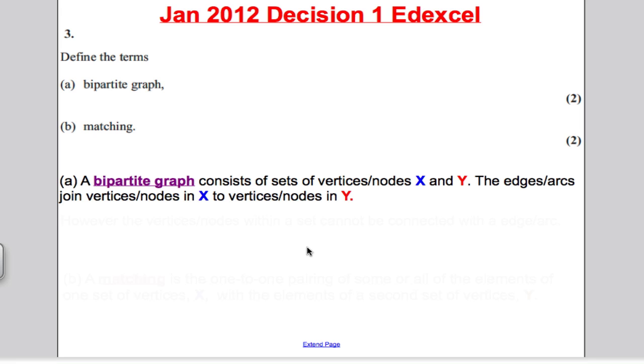But that only got you one mark. You had to state something else to get your second mark, and the something else was the vertices or nodes within a set cannot be connected with an edge or an arc. You can't connect the nodes in X to each other. So that's what you needed for your two marks.